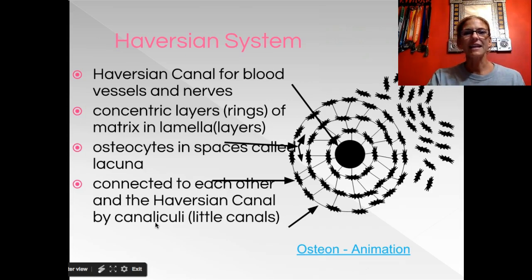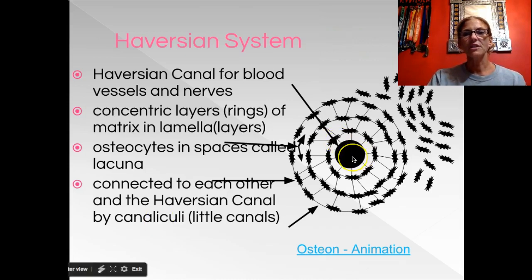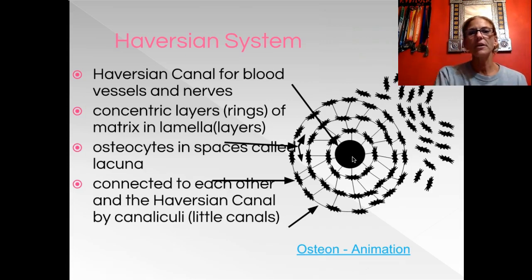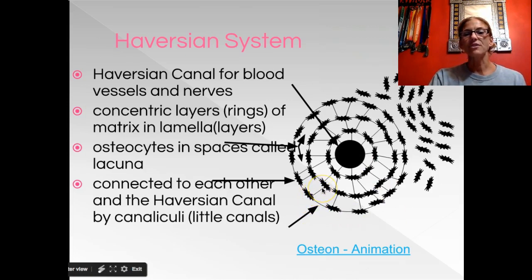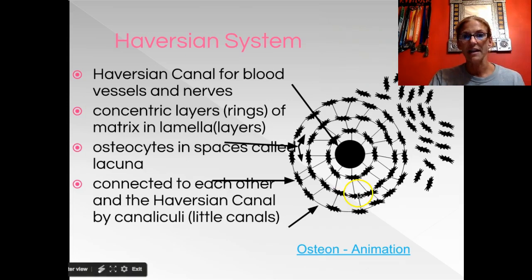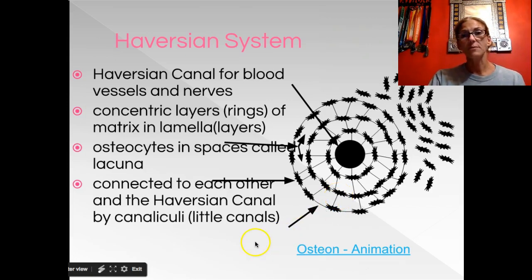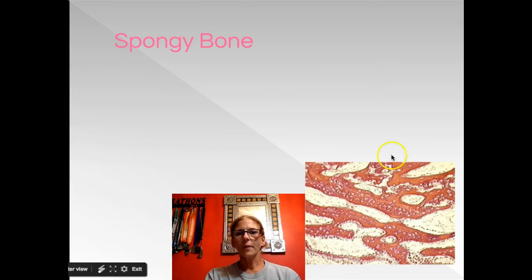The last structure is canaliculi — little canals. You have the Haversian canal running down the center of the bone, parallel with the surface, and then running between each of the lamella layers you have these little channels called canaliculi. Capillaries run between these osteocytes through the canaliculi, bringing nourishment to the osteocyte as well as removing waste products from the cell.